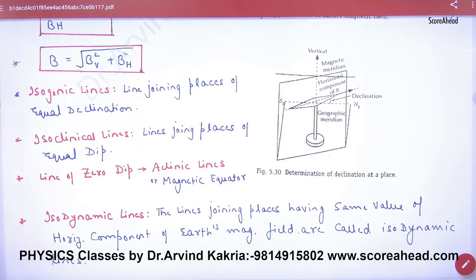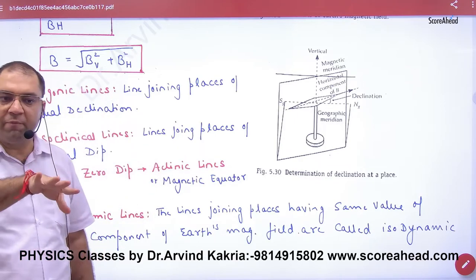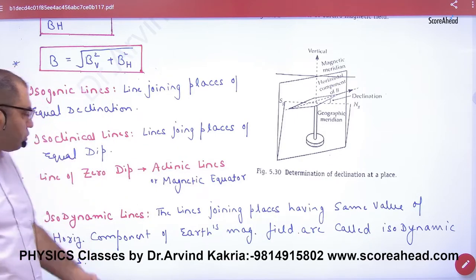Line of zero dip: all lines entering at the equator will have an angle of dip of zero. This is called the line of zero dip, adinic lines or magnetic equator.